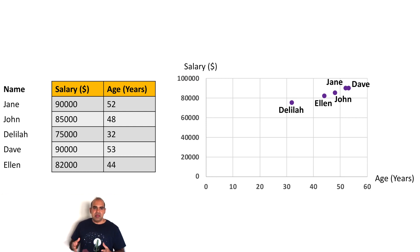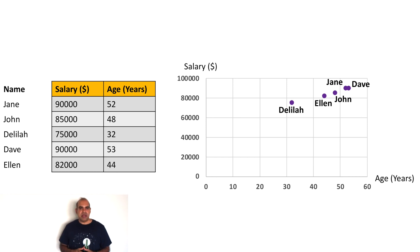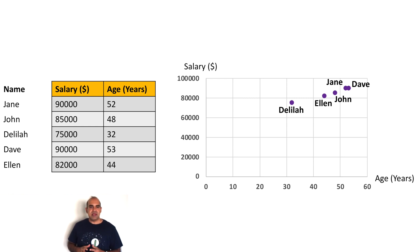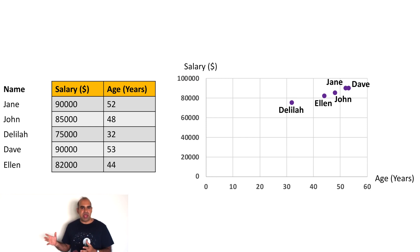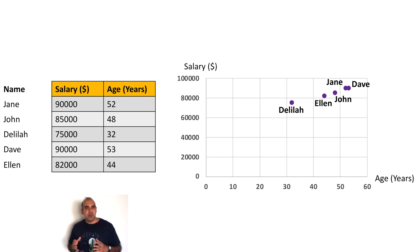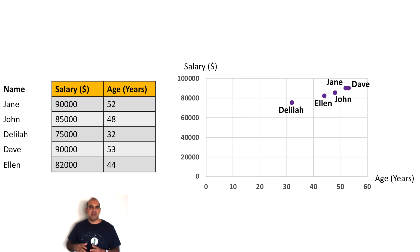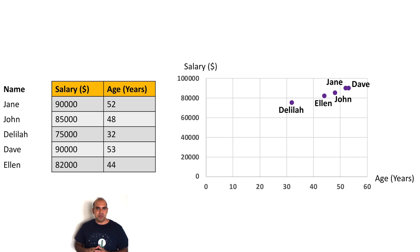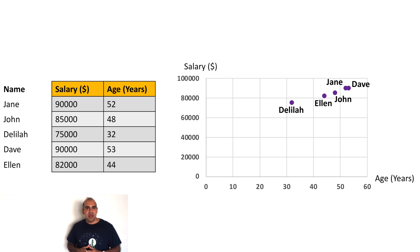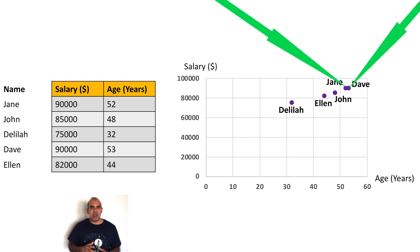The space is two-dimensional because the data set is two-dimensional — that is, the data set has two features. The dimension of a data set actually refers to the axes in the space that this data set creates. In this example, Jane and Dave have the same salary, which is why their positions on the vertical (salary) axis are the same.